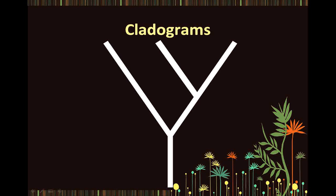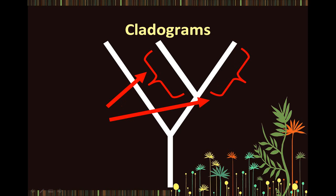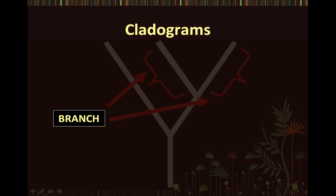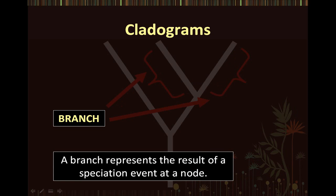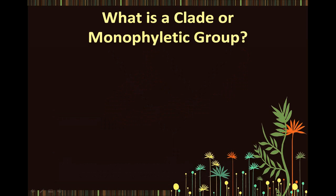Now that we know what an out-group is, let's go back to discussing the parts of a typical cladogram. We now know what a basal node is, but what about a branch? On a cladogram, a branch represents the result of a speciation event at a node. After speciation, as we saw in the mouse example, the evolutionary histories of the resulting two branches are separate.